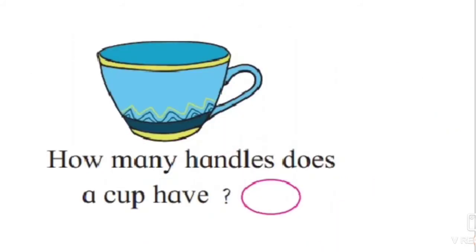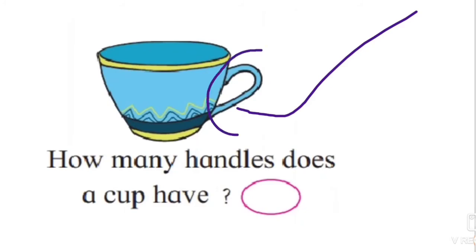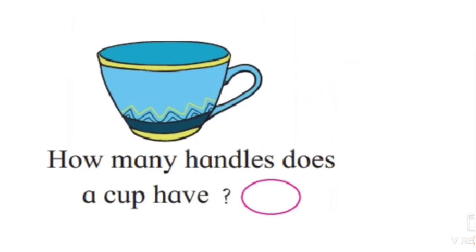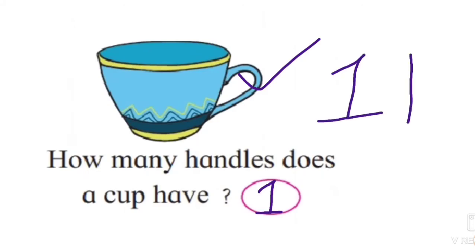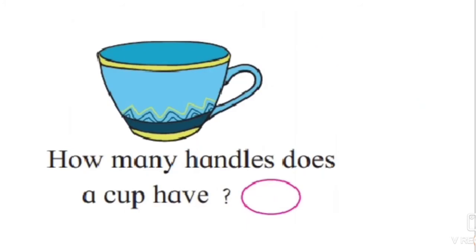What is this? This is a cup. How many handles does a cup have? This is the handle. A cup has only one handle. Write one in this empty space. How to write one — you can write one like this, or like this. First make a slanting line, then join a standing line, and then make a slipping line.